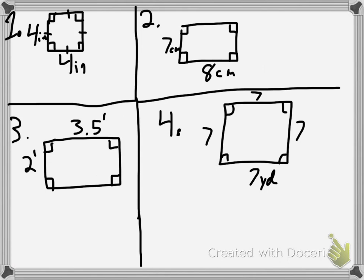So let's go ahead and do a couple examples. Start here with number 1. We have a square that is 4 by 4. So we know the area is going to be 4 times 4, which is 16.